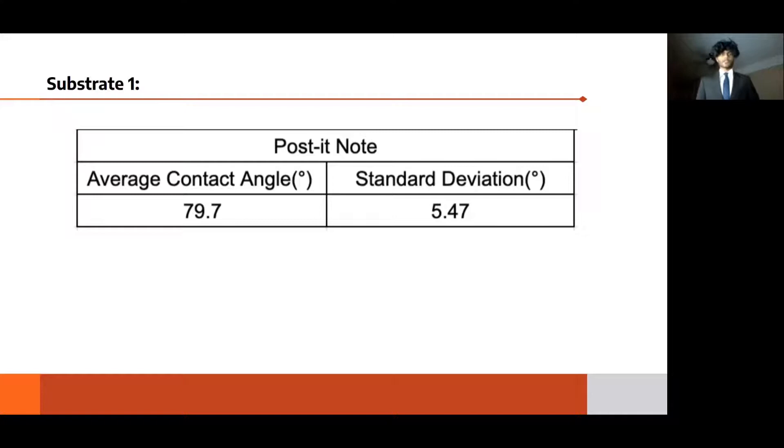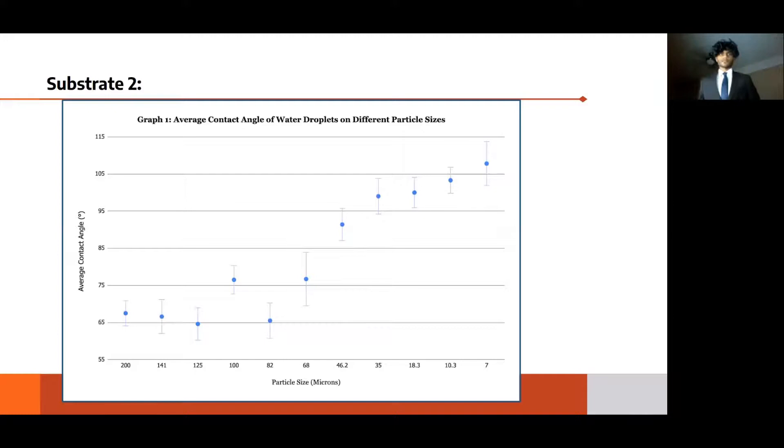This table is a cumulative average contact angle from 50 trials that we conducted for the control experiments on Post-it Notes. The reason we chose Post-it Notes as the control is that their surfaces are relatively standard regardless of where they are purchased from. As can be seen, the control angle was 79.7 degrees, demonstrating that the silicone material in and of itself is relatively hydrophobic.